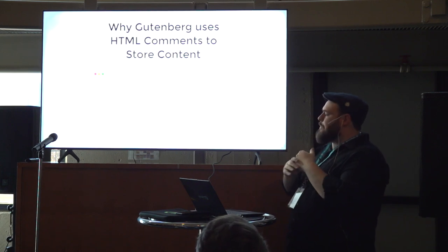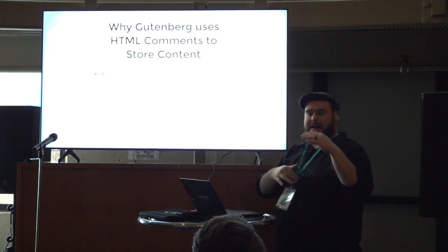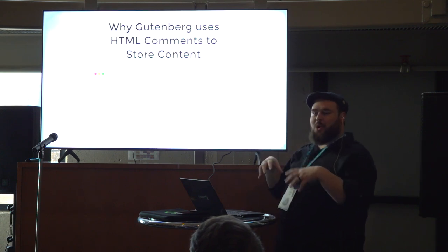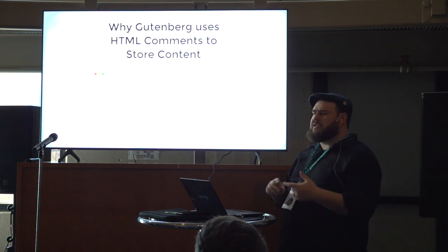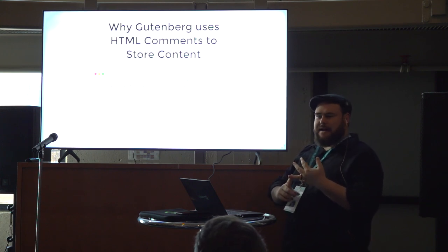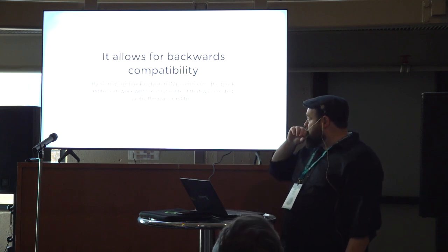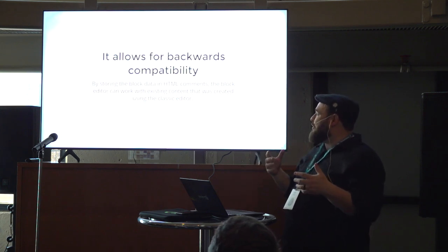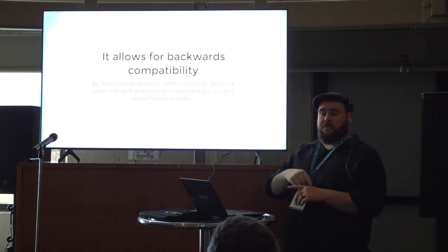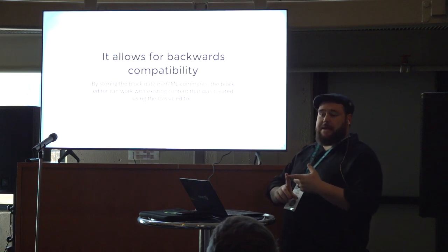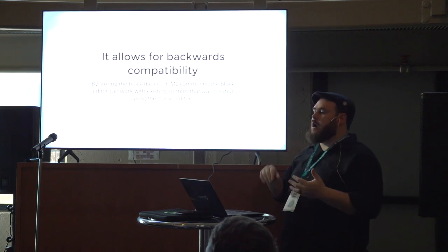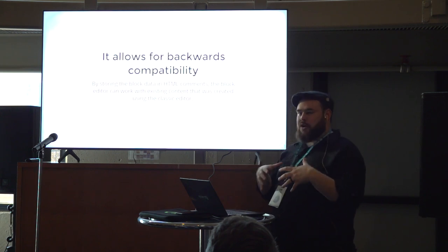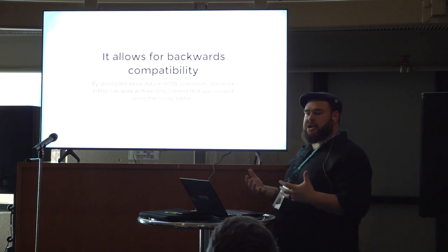One of the big controversies around Gutenberg has been the way it stores data in HTML comments. A lot of questions were raised: if we're separating the data dynamically from the content, why would we still store it in HTML and use HTML comments in this way to encode the data, as opposed to just storing JSON or another serialized format? There are a couple reasons. One, it allows for backwards compatibility — by storing the block data in HTML comments, the block editor can work with existing content that was created using the classic editor, and vice versa. Because it's just HTML, you can render it on a page, open it up in the block editor and it parses the blocks, open it in the classic editor and it's still just HTML.